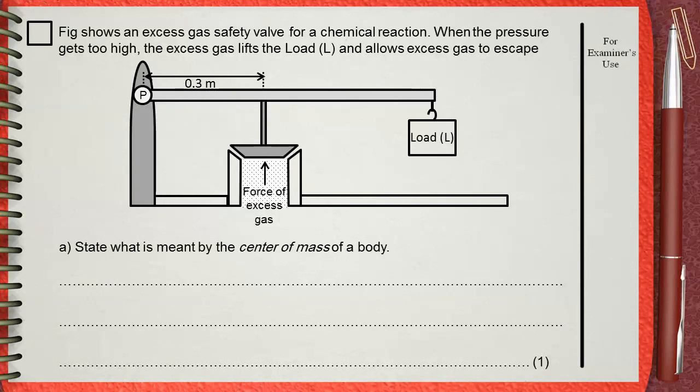Figure shows an excess gas safety valve for a chemical reaction. When the pressure gets too high, the excess gas lifts the load L and allows excess gas to escape. Part A states what's meant by the center of mass of a body.